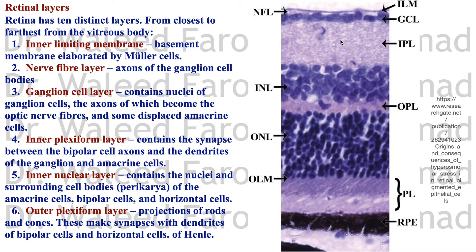The inner plexiform layer contains the synapses between the bipolar cell axons and the dendrites of the ganglion cells and amacrine cells. The inner nuclear layer contains the nuclei of the amacrine cells, bipolar cells, and horizontal cells.